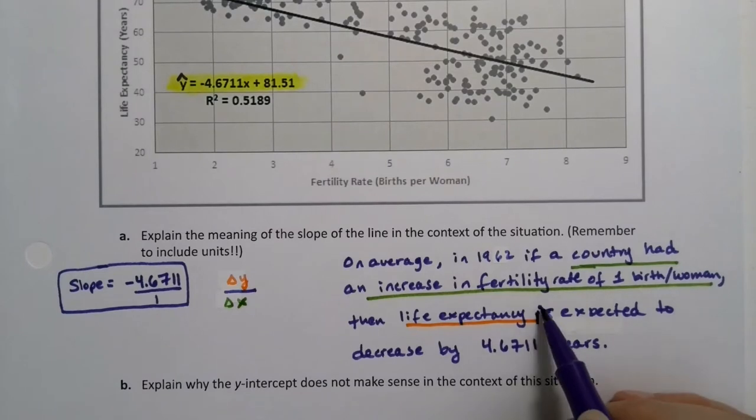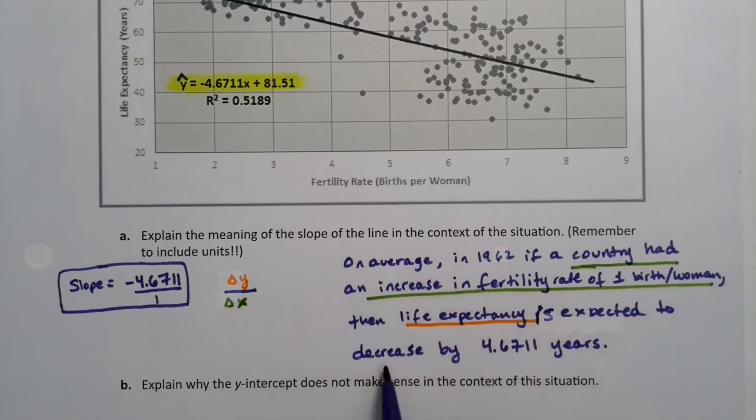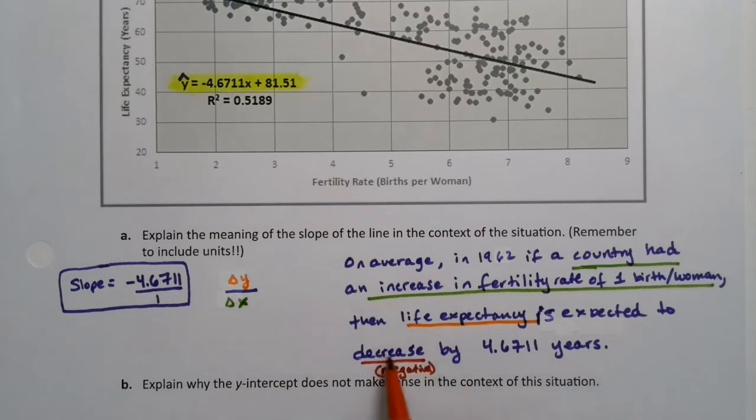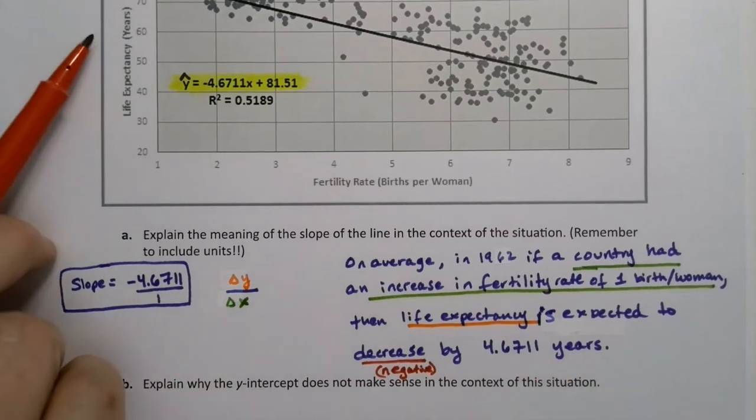Decrease because it's negative. So by saying the word decrease, I don't actually write negative 4.6711. The negative part is taken care of by the word decrease right here. So when I say decrease, I choose that because it's negative. So it's decreasing by 4.6711 years because that's my unit for life expectancy.